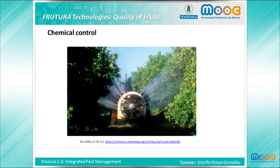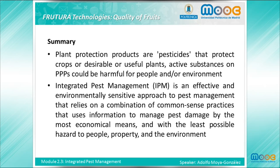Finally, it should be noted that the IPM approach also allows chemical control when necessary and as a last resort, once other options have not been effective. As a summary: plant protection products are pesticides that protect crops or desirable useful plants; active substances in plant protection products could be harmful for people and/or the environment; and Integrated Pest Management is an effective and environmentally sensitive approach to pest management that relies on a combination of common sense practices, using information to manage pest damage by the most economical means and with the least possible hazard to people, property and the environment.